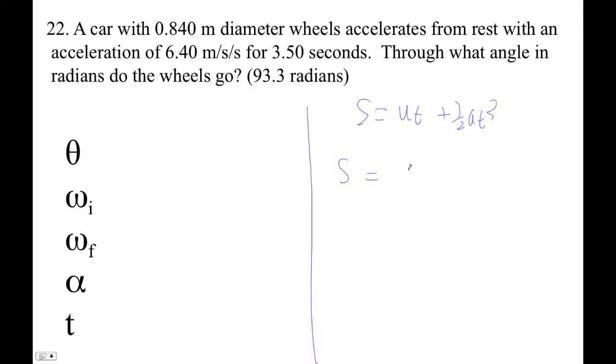So the displacement of the car is—I'm just totally ignoring everything. I just know that this car is not moving, right? Plus one-half, 6.40 is the acceleration, right? The time is 3.5. So the linear displacement of the car is 0.5 times 6.4 times 3.5 squared equals 39.2 meters.